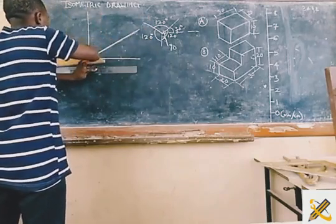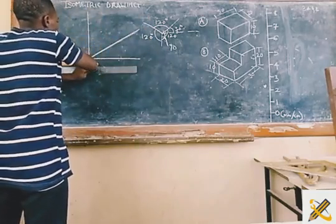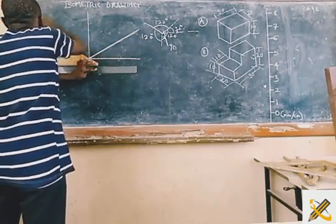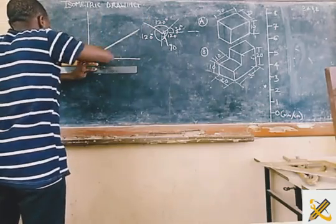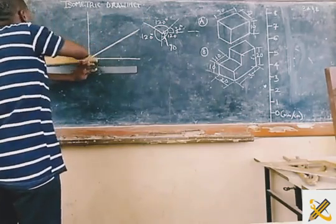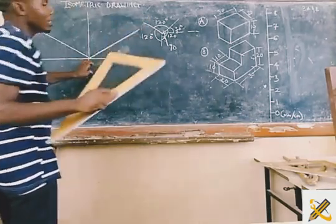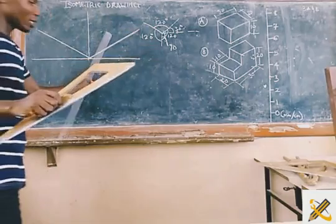I am drawing the isometric line towards that side and towards this axis. After doing that, the next step is to pick my compass to measure the dimensions correctly.